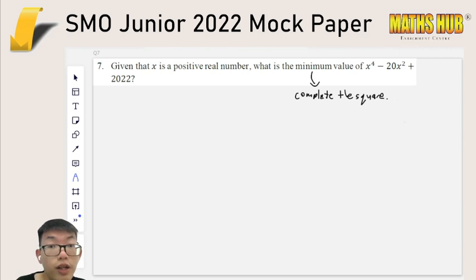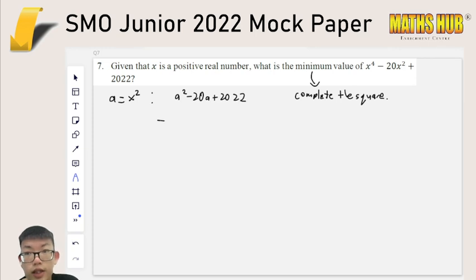In case you are not so comfortable with something like x to the 4 and 20x squared, because that's not usually what we do when we are completing the square, we can just do a substitution of a equals to x squared, and that will cause this expression to look like a normal one. a squared minus 20a plus 2022. And this is pretty easy to complete the square for. 20 divided by 2 is 10. So a minus 10 squared minus 100 plus 2,022 would be 1922.